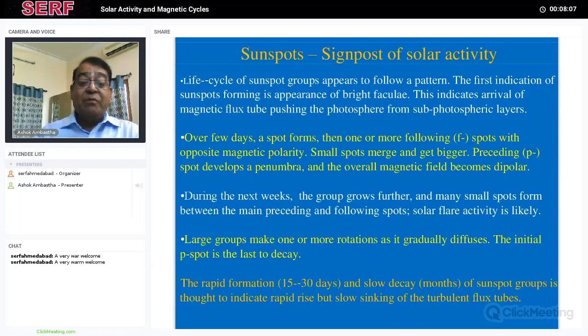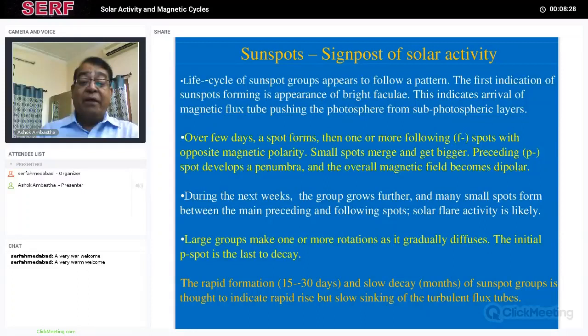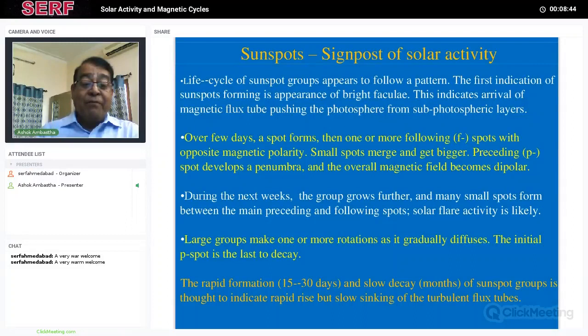Sunspot groups gradually decay by diffusion or submergence into the photosphere. The initial P-spot, which was first seen, is usually the last one to decay. Formation of a sunspot typically takes 15 to 30 days, and slow decay can last for weeks or sometimes months. Some exceptional groups can appear within a day. So this is the life cycle of a sunspot group.